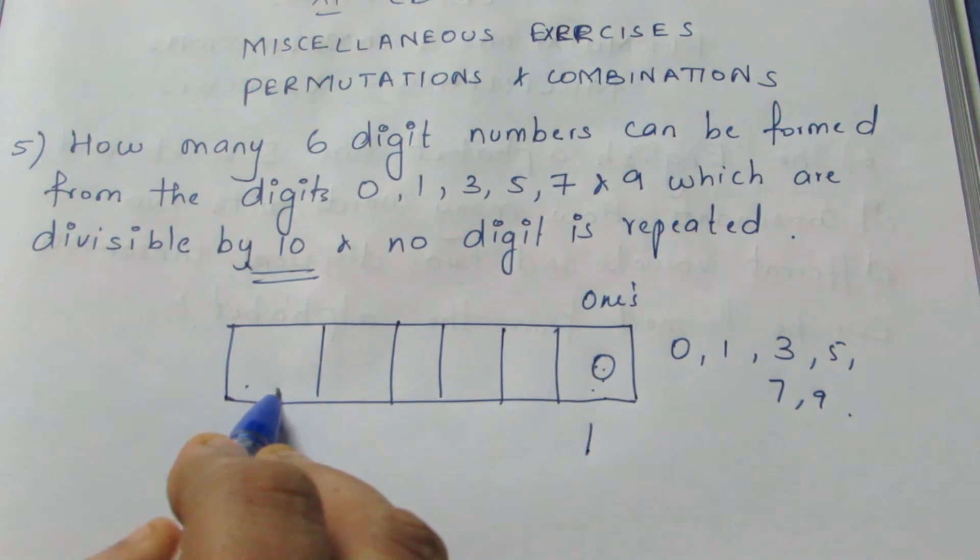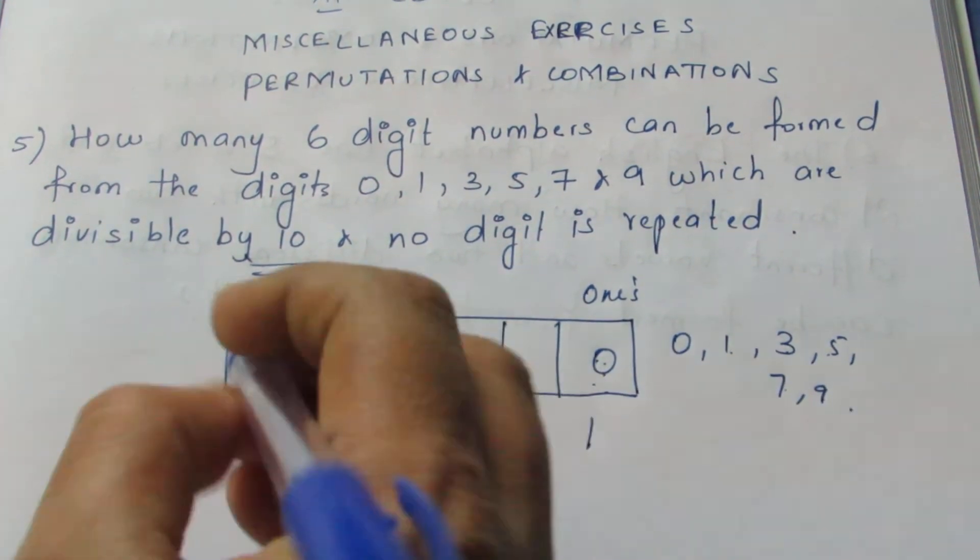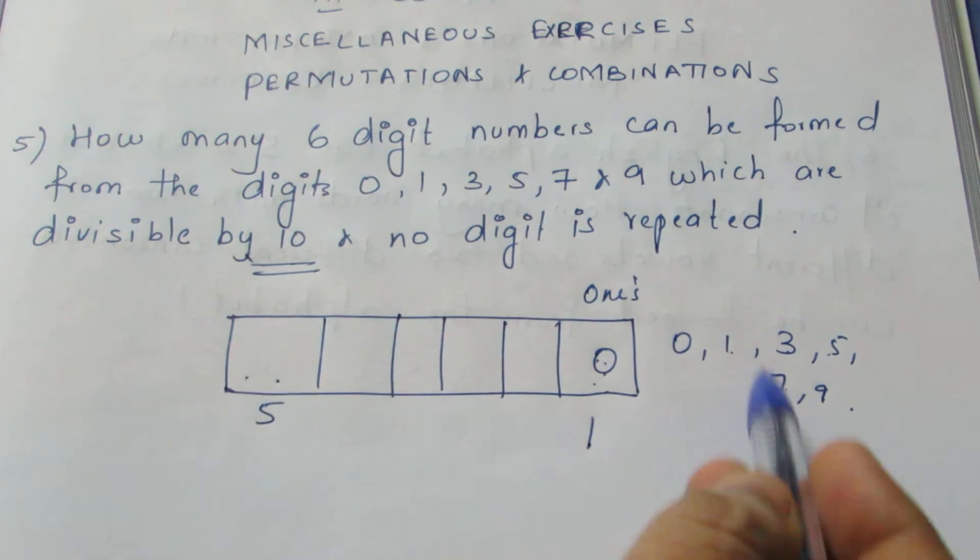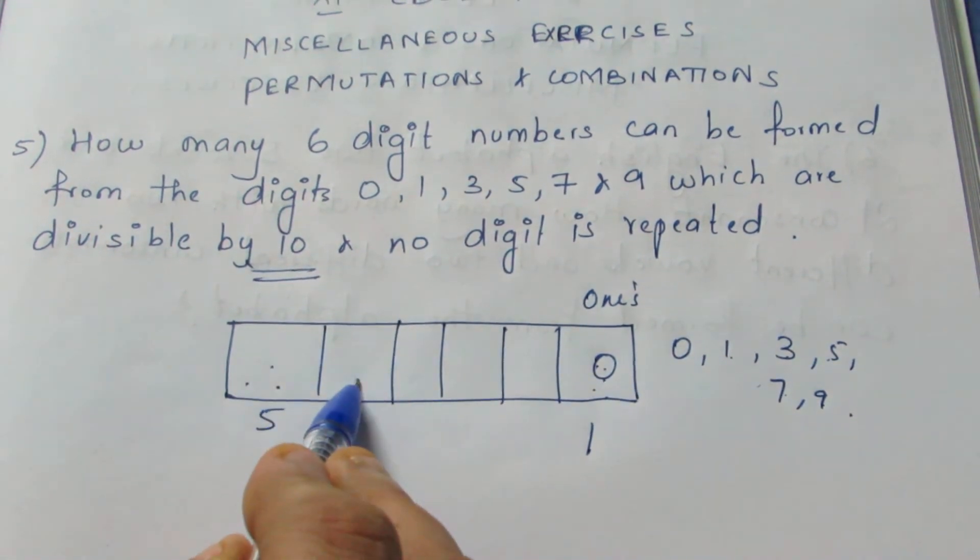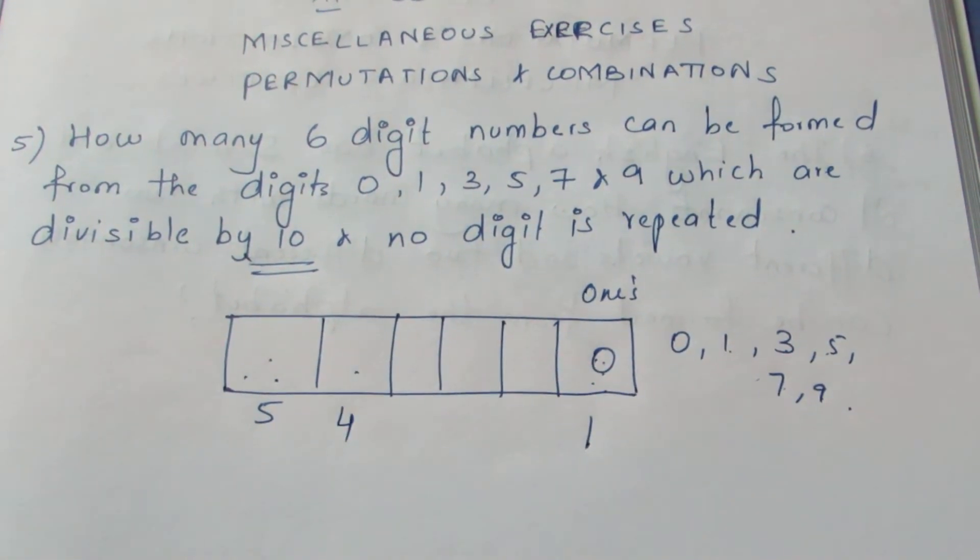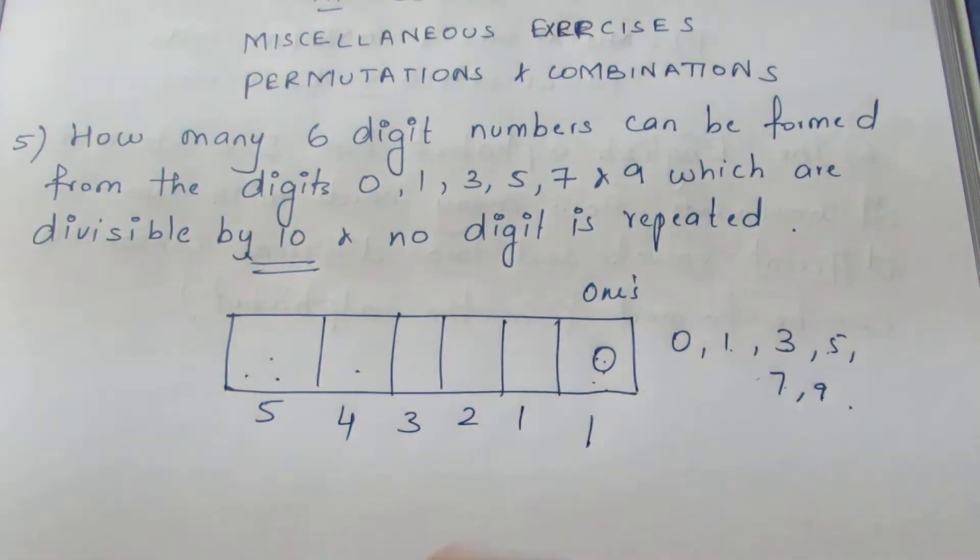In this place, we can fill the rest of the 5 numbers. So it is 5 ways here. Filling 1 number here, balance 4 numbers you can fill here. So we can fill it in 4 ways, 3 ways, 2 ways, 1 way.